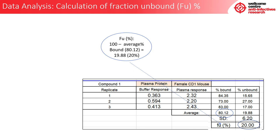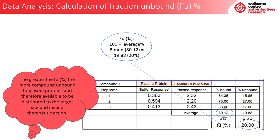You can also calculate standard deviation to check that there is not too much variability between the replicates. The greater the %fu, the more compound is unbound to plasma proteins and therefore available to be distributed to the target site and incur a therapeutic action.